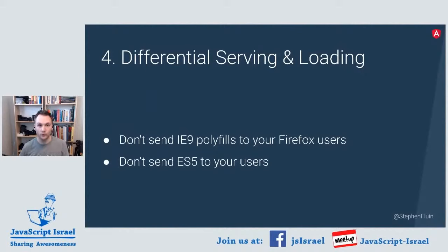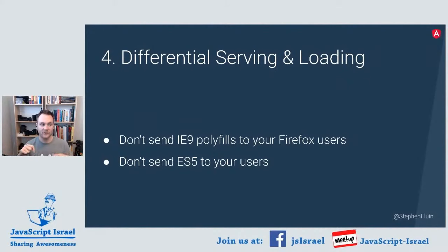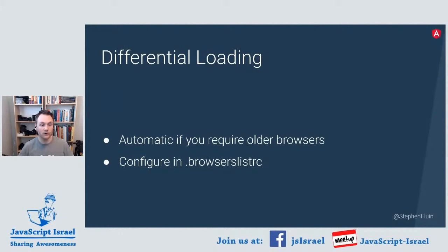Differential serving is a really important strategy if you need to support older browsers. Version 10 doesn't even generate ES5 bundles anymore. If you're coming from an older Angular version, you probably still have a browserlist config generating ES5. Angular looks at your browserlist and if any browsers you're targeting require ES5, we do a modern JavaScript build and then transpile down to ES5. We actually have the capability to support browsers that support modern JavaScript and those that don't. The key idea: don't send IE9 polyfills down to Firefox users — just configure older browsers in your browserslist RC file and Angular handles it automatically.